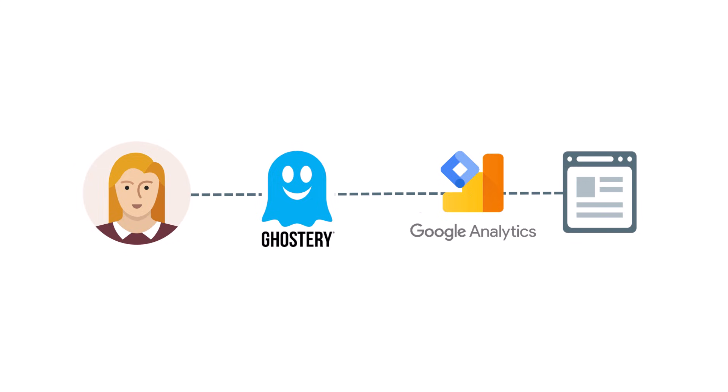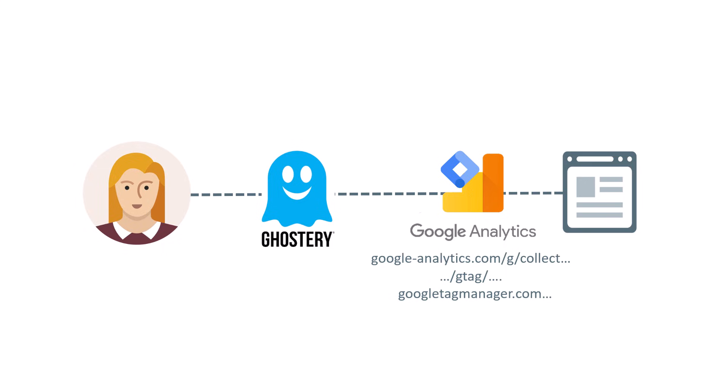What this extension does is it looks at requests sent from your website. And if those requests contain some domains like googleanalytics.com, or maybe the URL contains the word gtag or googletagmanager.com or something similar, then that browser extension will block those requests, which means that Google Analytics, Google Tag Manager, or other tracking codes you have installed on your website will be blocked as well.